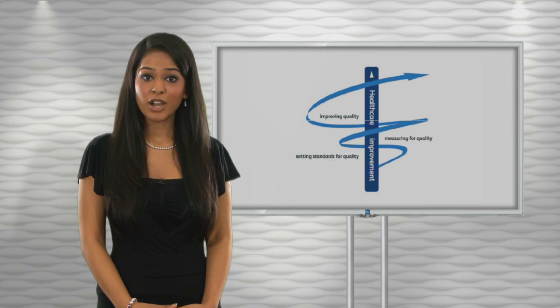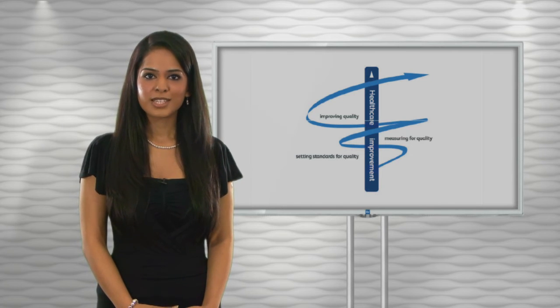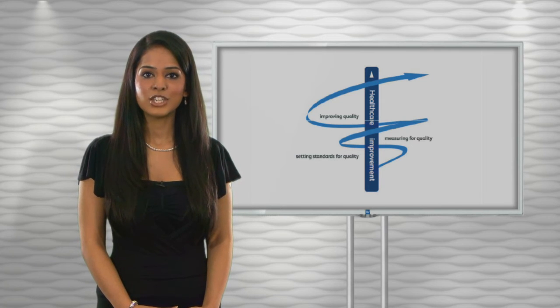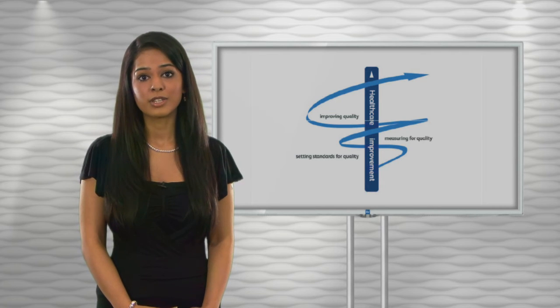It's often called an audit spiral rather than a cycle. The spiral suggests that as the process continues, each cycle aspires to a higher level of quality.